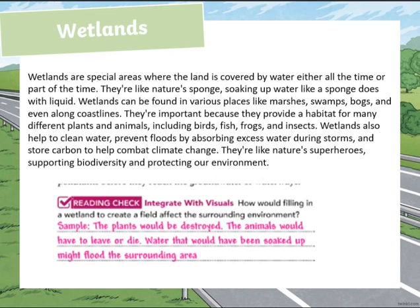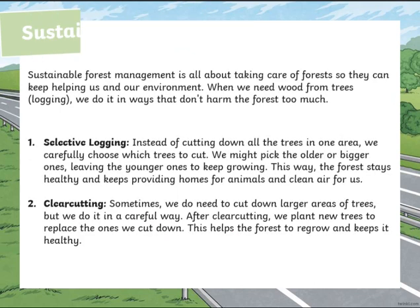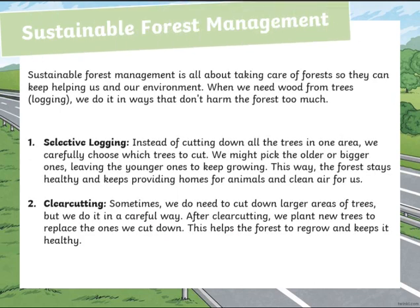We have a reading check from your textbook: How would filling in a wetland to create a field affect the surrounding environment? The plants would be destroyed, the animals would have to leave or die, and water that would have been soaked up might flood the surrounding areas.